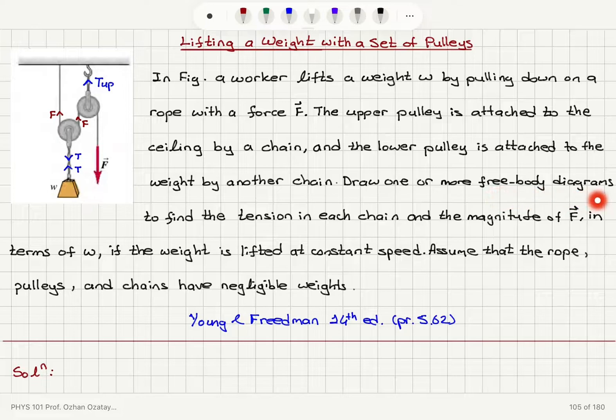Draw one or more free body diagrams to find the tension in each chain and the magnitude of F in terms of W. If the weight is lifted at constant speed, assume that the rope, pulleys, and chains have negligible weights.